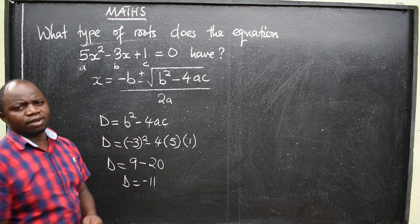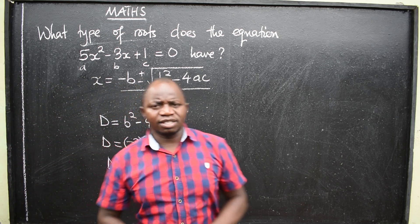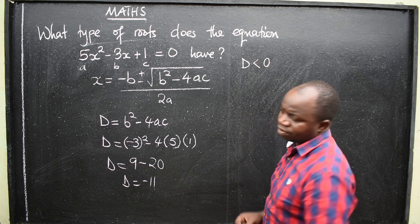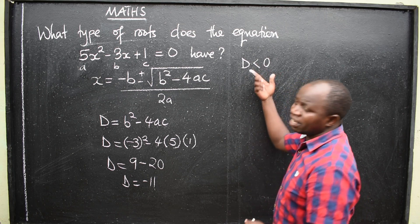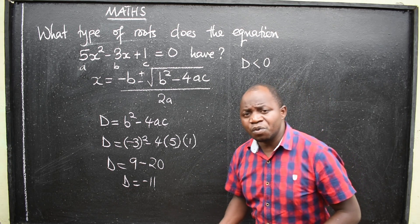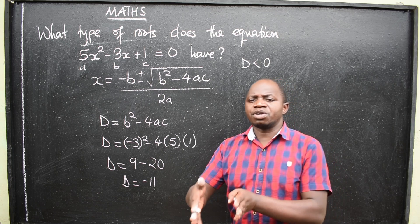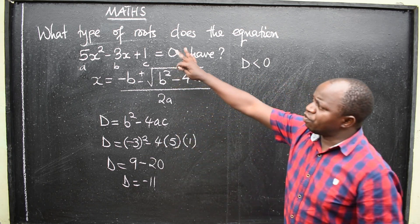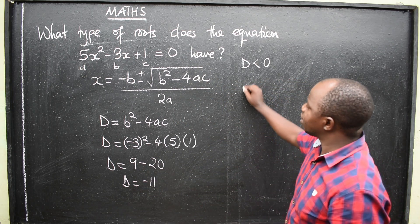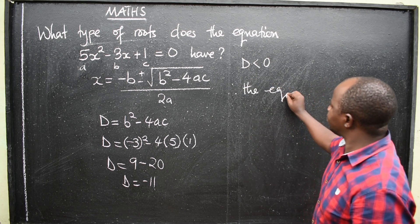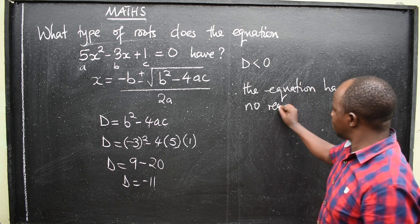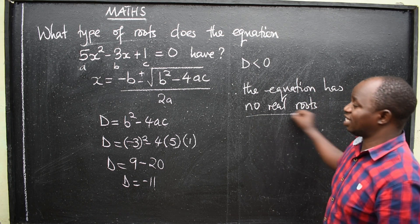This is our discriminant. Now, the property is that if the discriminant is negative, or if d is less than 0, then the roots of such a quadratic equation will always be no real roots. So for this equation, since the discriminant is negative 11, therefore the equation has no real roots. That is your final answer.